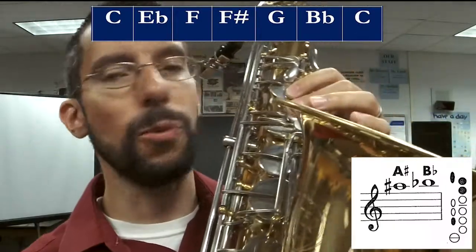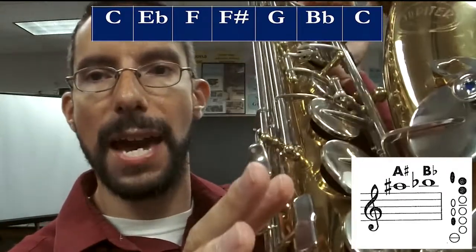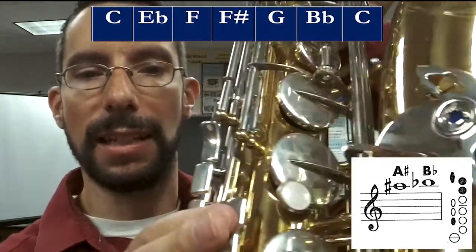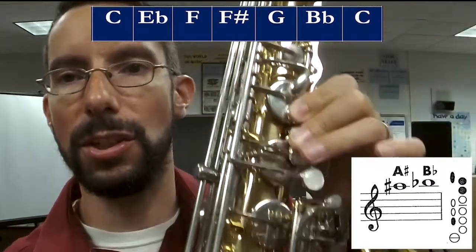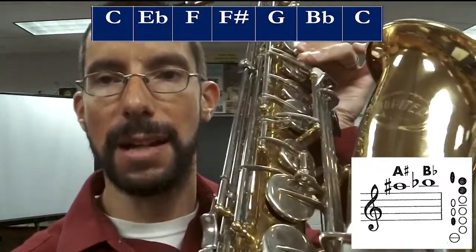Then B flat, which is one and two on the left hand, and then the bottom silver side key right here. So not the top, but the bottom one. So it's one and two, the octave key, and the bottom side key.